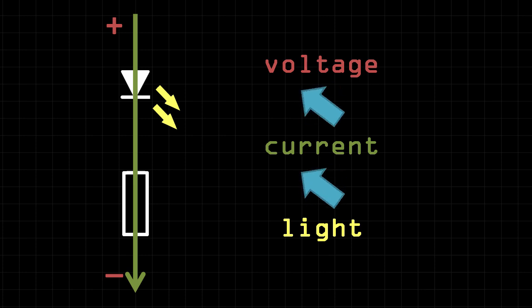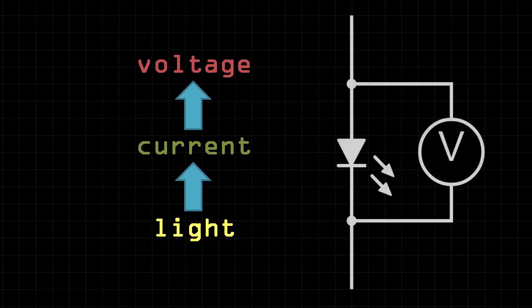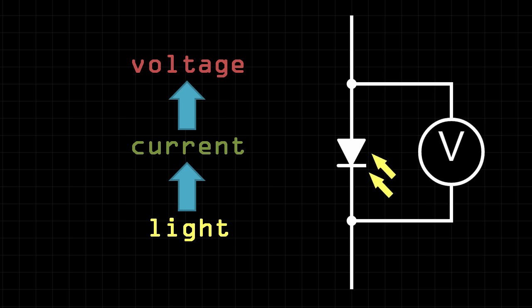The question is, can we reverse this? And the answer is yes. If we instead shine light onto an LED, a current will pass through the LED, though now in the opposite direction as before.